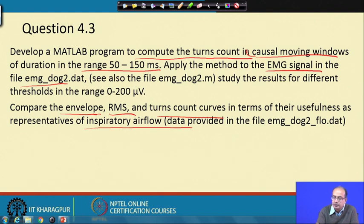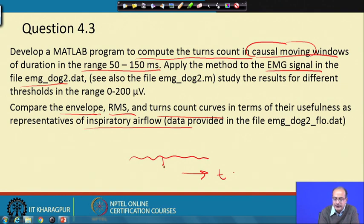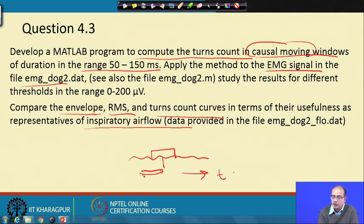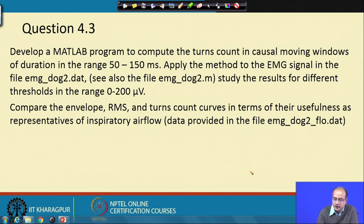Another thing we need to look at is the causal moving window. If this is the signal and we are looking at a particular instant, our window should include only the present and past values. If we take a window that extends into the future, it becomes non-causal. So we need to restrict it to present and past signals — the moving window or MA filter should be causal.